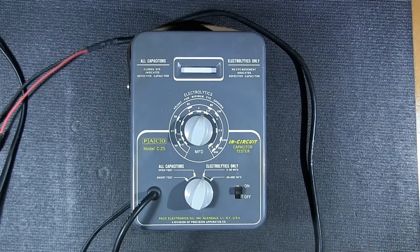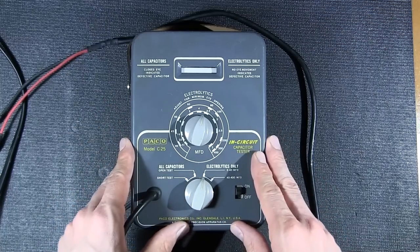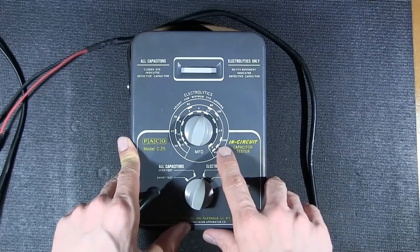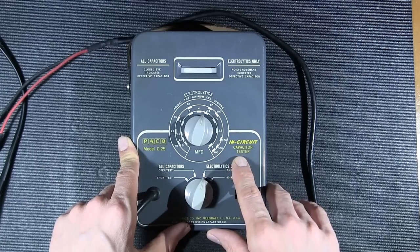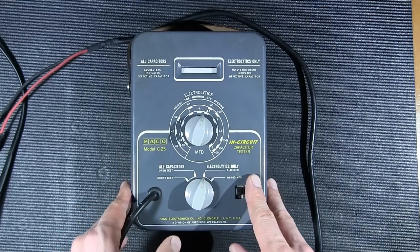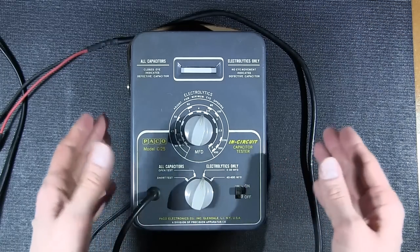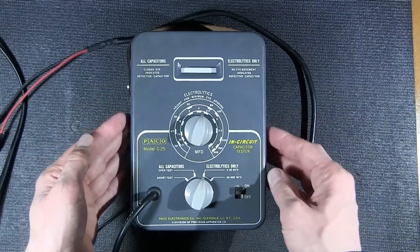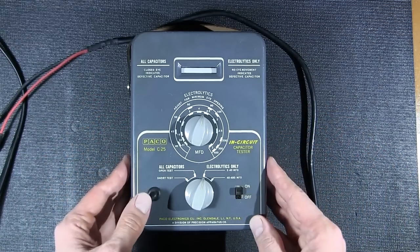The first capacitor tester that we're going to take a look at today is this PECO model C25 and this is classified as an in-circuit capacitor tester. It truly is an in-circuit capacitor tester due to the ingenious little circuit that they've designed inside this box. It really is quite bizarre.